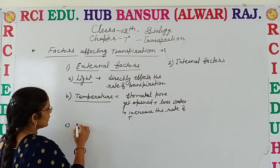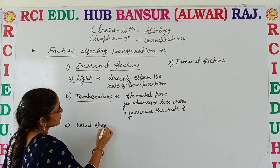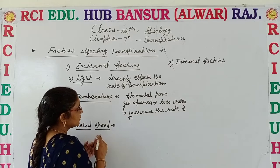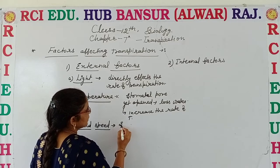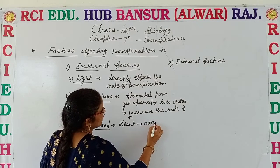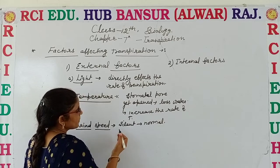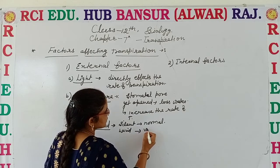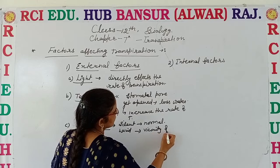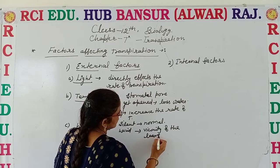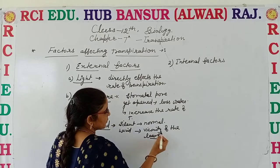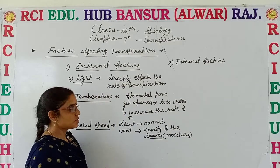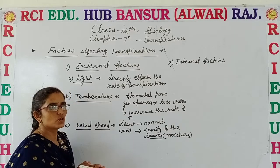Another factor is wind speed or wind velocity. When the air is not blowing and it is silent, the rate of transpiration is normal. But when the air is moving or wind is there, it removes the moisture in the close vicinity of the leaves. And when it removes that moisture, the rate of transpiration is also automatically increased.